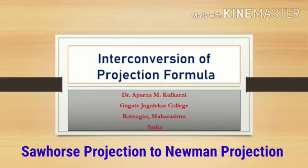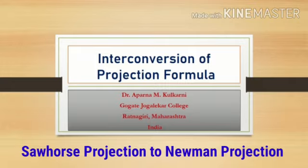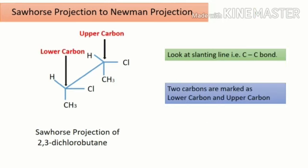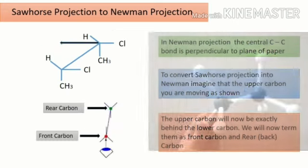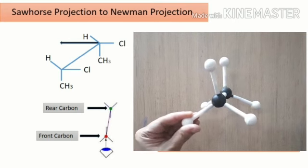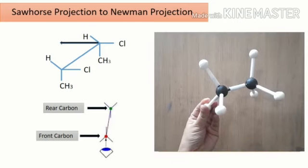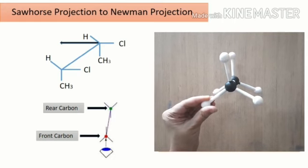Let us now check the conversion of Sawhorse projection to Newman projection. Let us take the Sawhorse projection of 2,3-dichlorobutane. Look at the slanting line, that is the central carbon-carbon bond. For convenience, let's mark the two carbons as lower carbon and upper carbon. In Newman projection, the central carbon-carbon bond is perpendicular to the plane of paper. To convert Sawhorse to Newman projection, imagine that the upper carbon is moving as shown by the arrow. After moving the upper carbon, it will now be exactly behind the lower carbon.